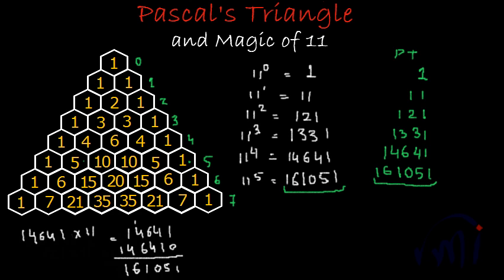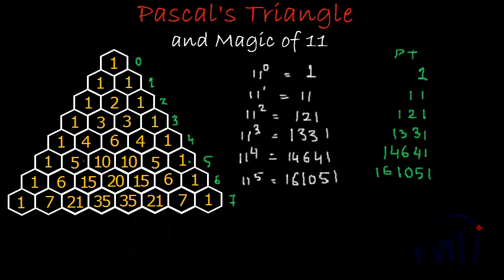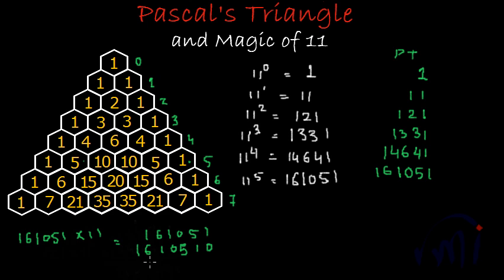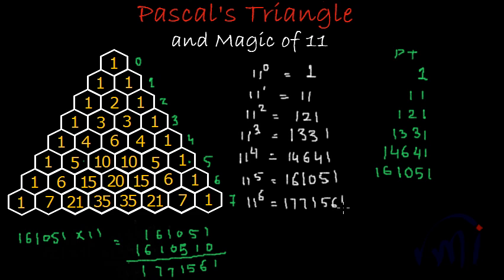What about 11 to the power 6? That is 11 to the power 5 multiplied by 11, so 161051 plus 1610510. Adding: 1, 6, 5, 1, 7, 0, 7, 0, 1 — giving 11 to the power 6 as 1,771,561.